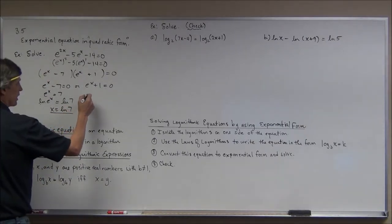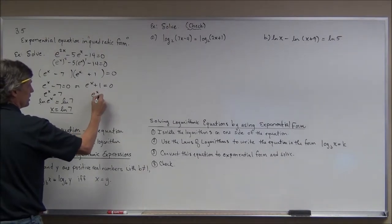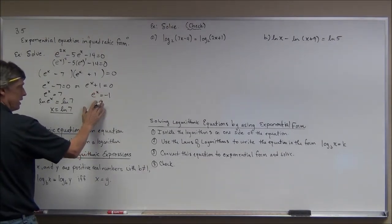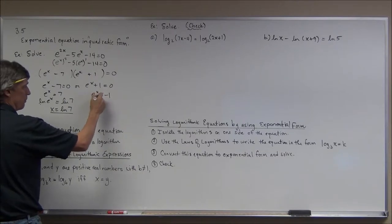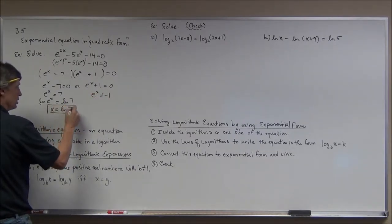Over here, if I subtract 1 from both sides, I get e to the x is equal to negative 1 and stop and think about this. This can't happen. A positive number, about 2.71, to a power can't be negative. So this can't be true. So I only have one solution.